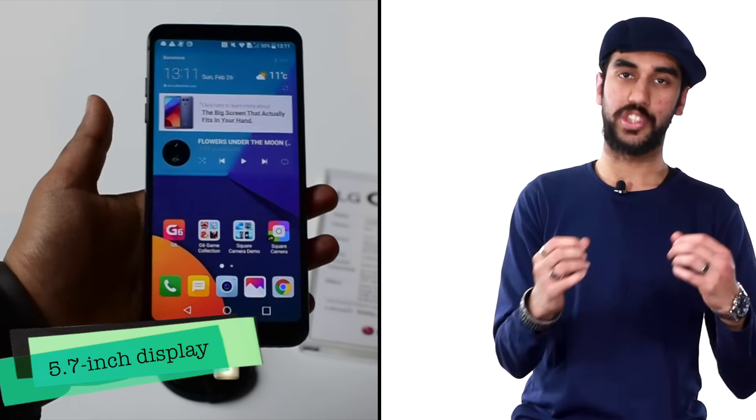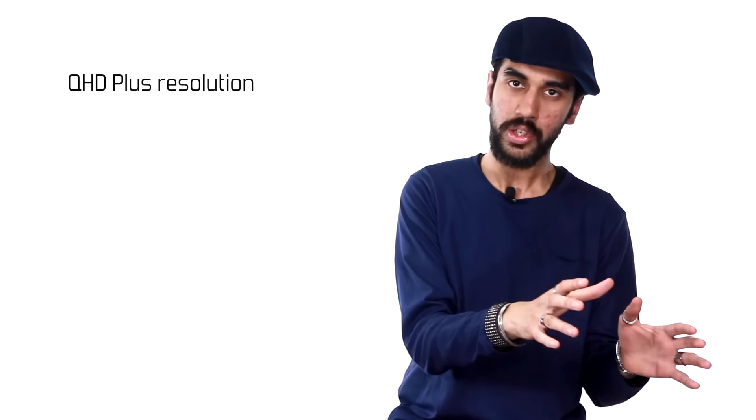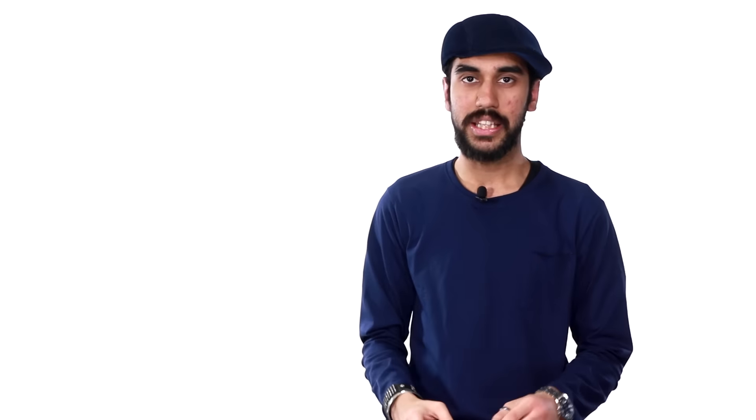The phone packs in a 5.7 inch display that covers most of the front of the smartphone. It is of Quad HD plus resolution and the aspect ratio is 18 to 9. This aspect ratio is called full vision display by LG and it makes the phone bigger by making it taller, not wider. So it's easier to use than most other tablets out there in the town.